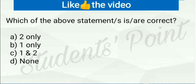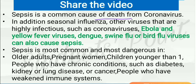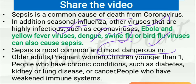Sepsis is a common cause of death from coronavirus. In addition, seasonal influenza, other highly infectious viruses such as coronavirus, Ebola, yellow fever, dengue, swine flu, or bird flu can also cause sepsis. Sepsis is most common and most dangerous in older adults, pregnant women, children younger than one, or people who have chronic conditions such as diabetes, kidney or lung diseases, cancer, or people who have weakened immune systems.